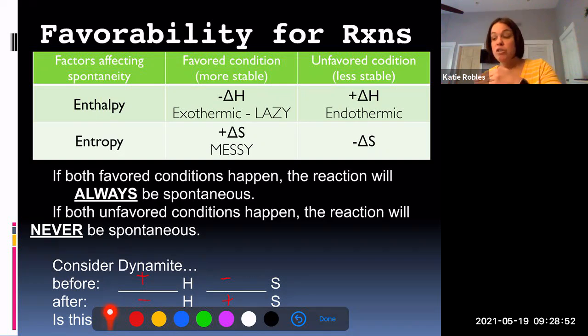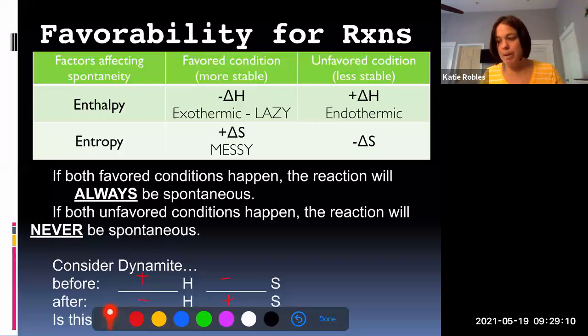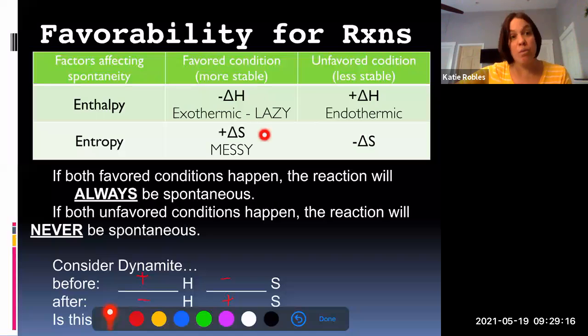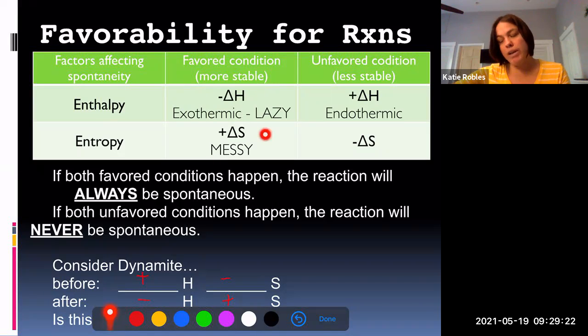If both of them don't happen the reaction is not going to be spontaneous. If you're trying to run in the other direction—and the example of that would be, you know, the idea that you're gonna run something backwards from what it should go—that's a little bit harder. Now you might be wondering, well what happens if one of these is negative and then the other one is also negative? What if you have something that's exothermic but it's going to become more orderly? This is the example of our electric car.